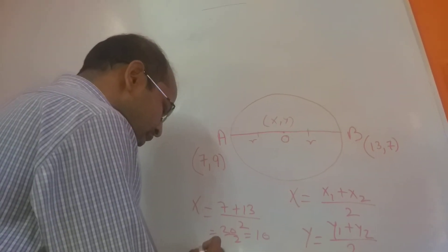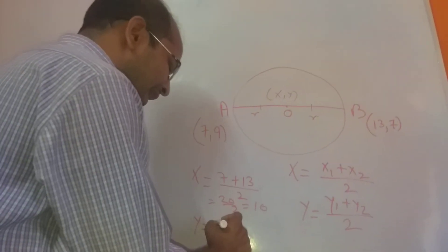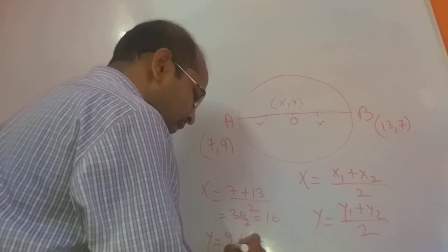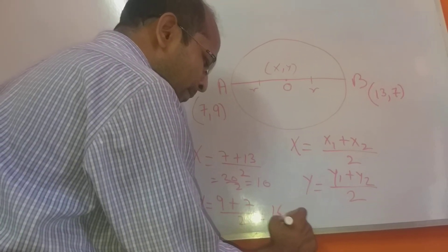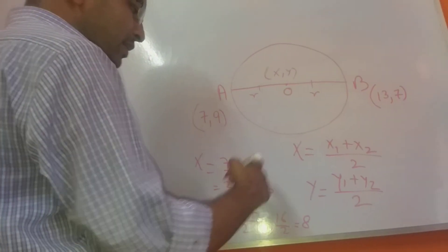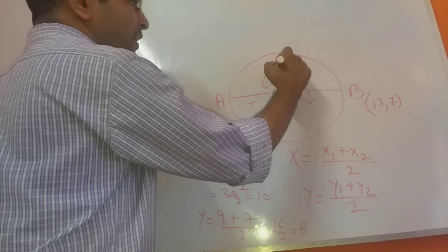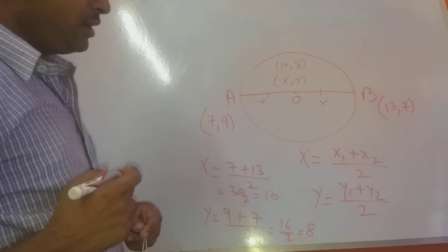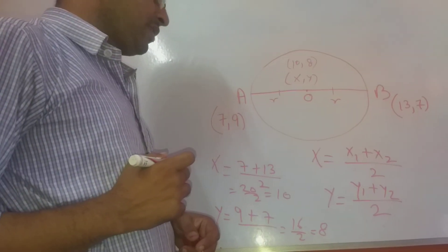Now for Y, it will be Y1 which is 9, plus Y2 which is 7, by 2. So it will come 16 by 2, which is 8. So the answer will be 10 and 8, the center of the circle.